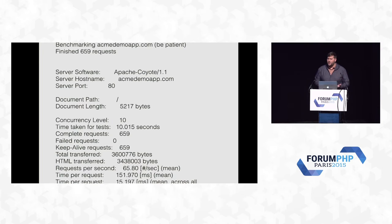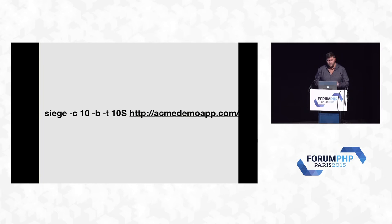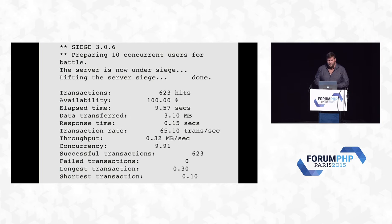Apache Bench makes it very easy to load test a single endpoint and is available on all operating systems. But I actually prefer Siege. Siege is a much easier and more flexible tool that works very similarly to Apache Bench. We'll take the same load test we ran on Apache Bench and run it with Siege — the same format, -c for concurrency, 10 concurrent HTTP requests for 10 seconds. Here we get roughly the same output: 65 transactions per second with about 50 milliseconds latency.